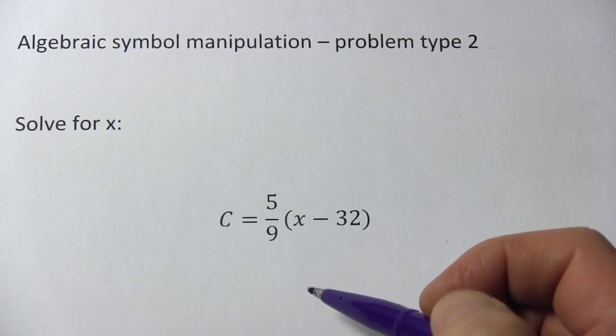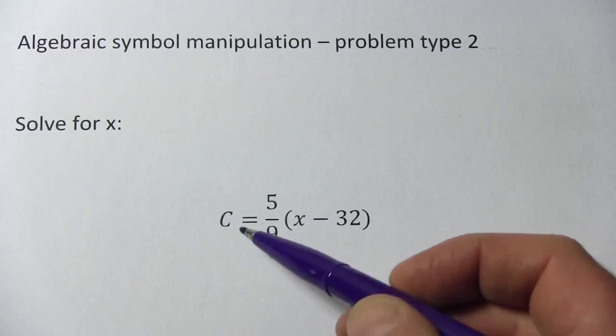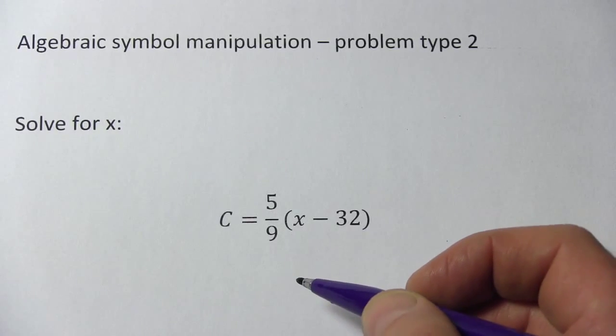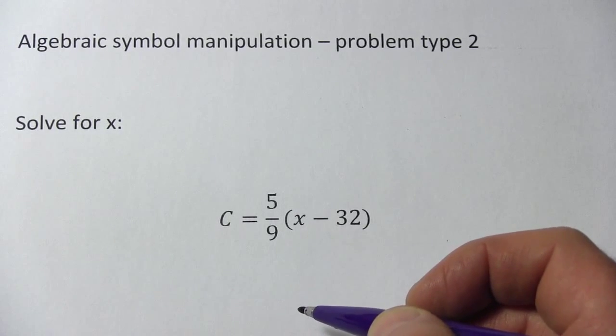Here we're being asked to solve for x and there's another variable in the equation. There's a c over here and also x is inside some parentheses, so how do we deal with that?